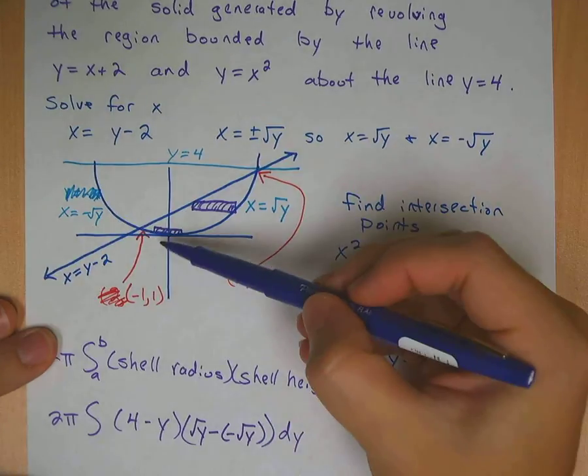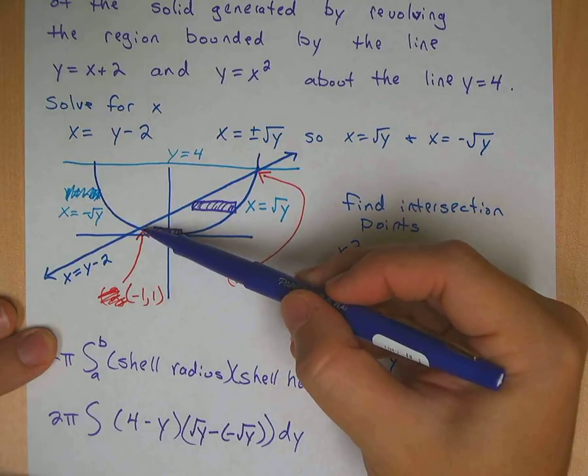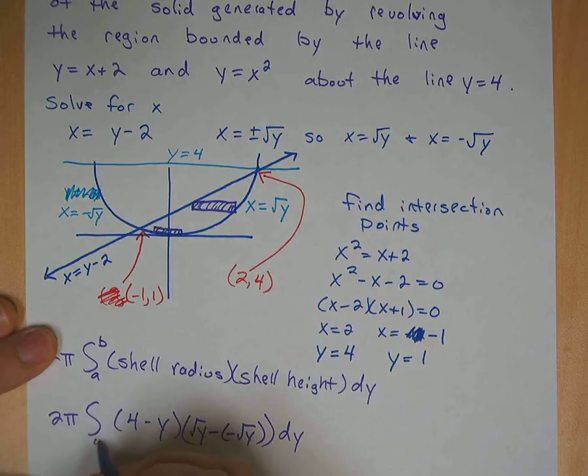So the right side of your shell is square root of y, and the left side of your shell is negative square root of y. You're going to subtract. So it's square root of y minus a negative square root of y, dy. Your limits, your y limits, well, you start at the very bottom here, which is at zero, and you move up to this y intersection, which we found earlier to be one. So we're going to say our limits are from zero to one.